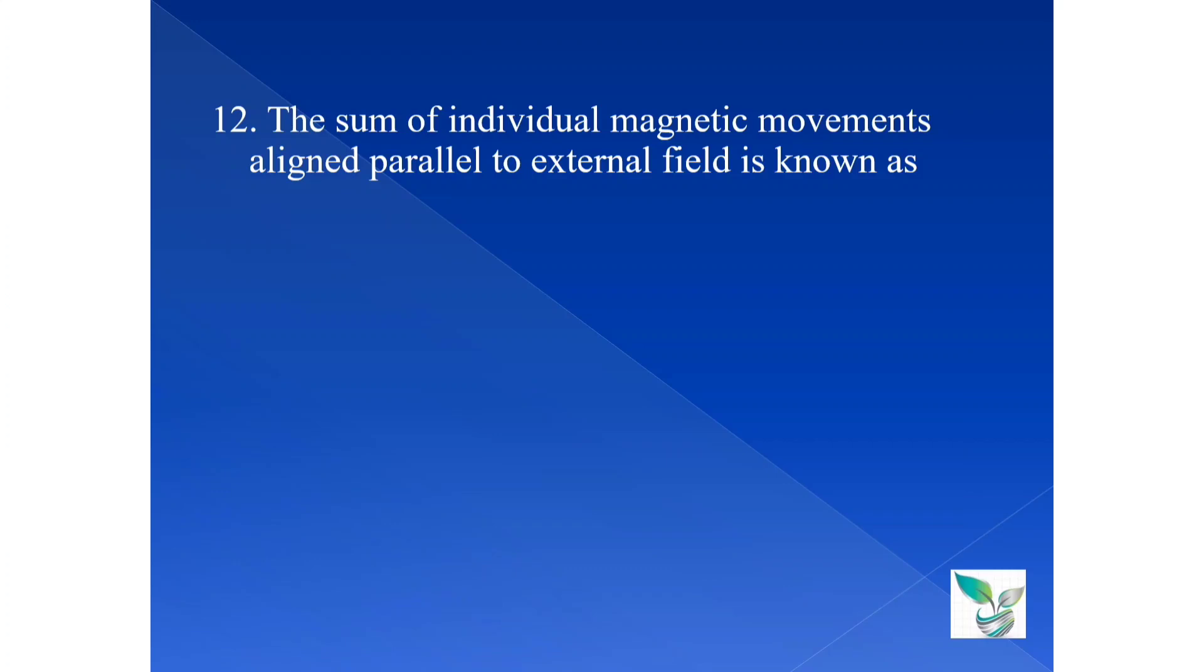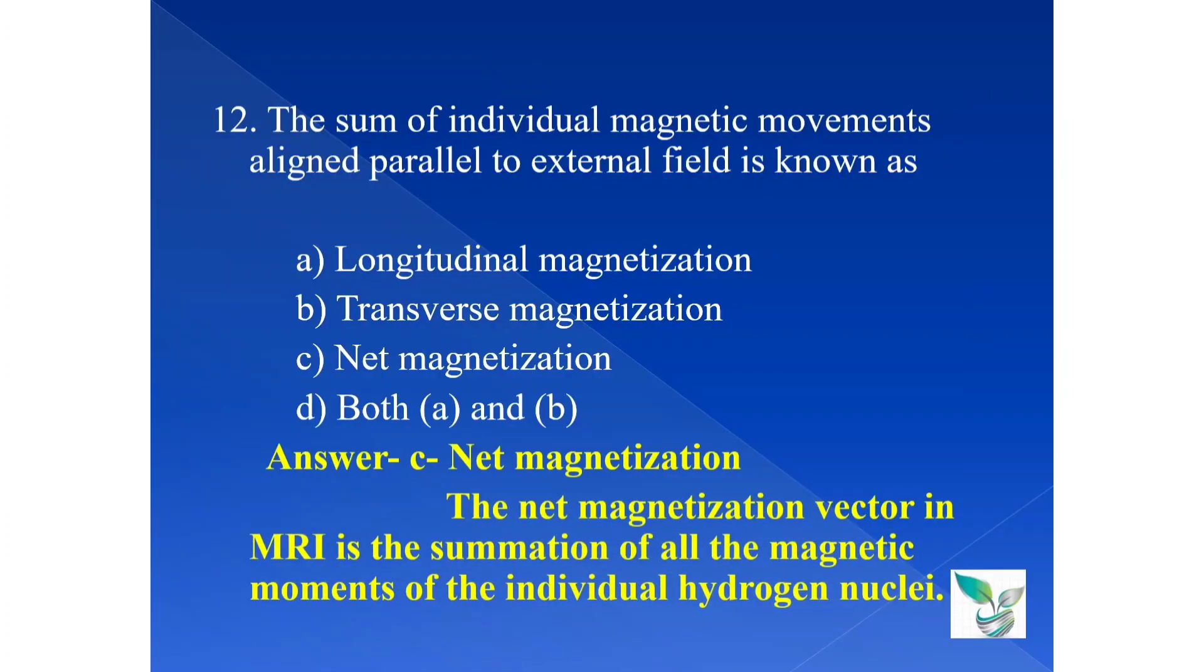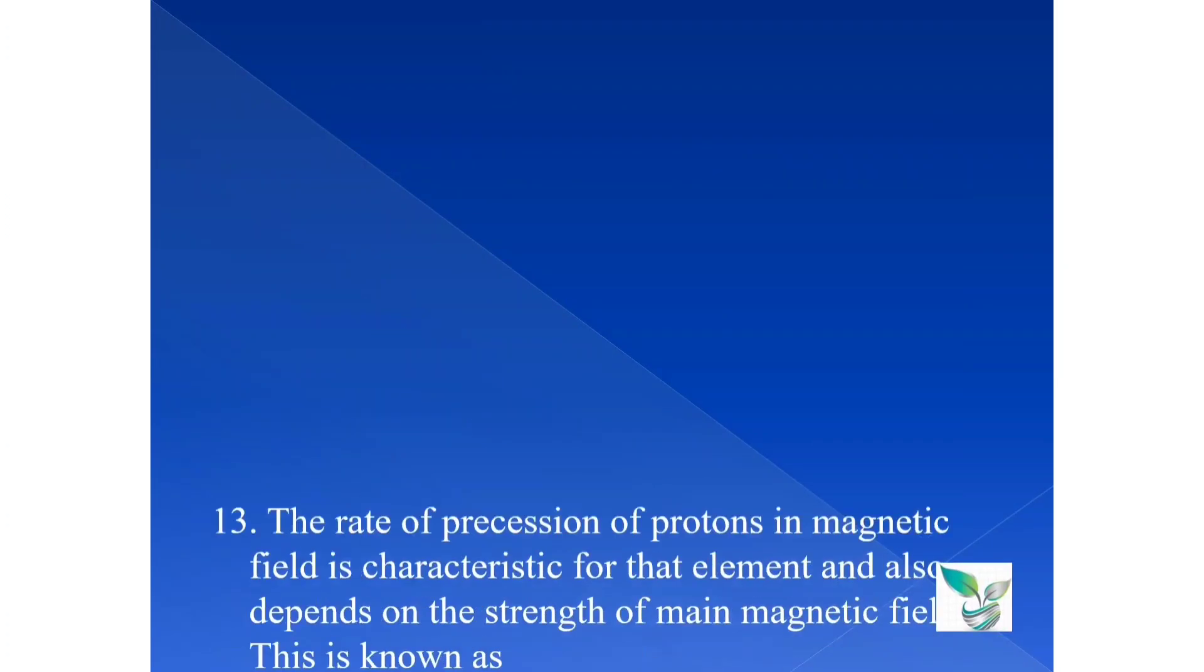Moving on to the next question, question number 12. The sum of individual magnetic moments aligned parallel to external field is known as: option A longitudinal magnetization, option B transverse magnetization, option C net magnetization, and option D is both A and B. The answer is option C net magnetization. The net magnetization vector in MRI is the summation of all the magnetic moments of the individual hydrogen nuclei.